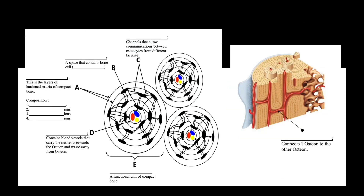This is the structure of compact bone. It is made up of many osteons, also called Haversian systems, which are the functional units of compact bone. Each osteon is made up of many concentric circles called lamellae — the layers of hardened matrix. Initially, the matrix is made of flexible collagen, which then hardens due to the deposition of calcium, magnesium, and potassium ions.